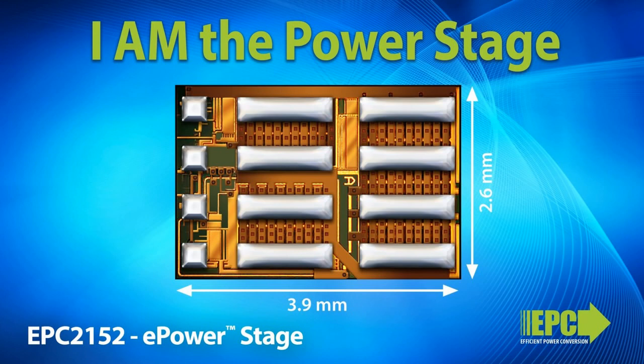We are introducing the ePowerStage IC family, redefining power conversion by integrating all functions on a single GaN on silicon integrated circuit at higher voltages and higher frequency levels beyond the reach of silicon. ePower is EPC's trademark for a growing family of integrated power stage products that combine the control functions with the power output devices. We call them ePowerStages.